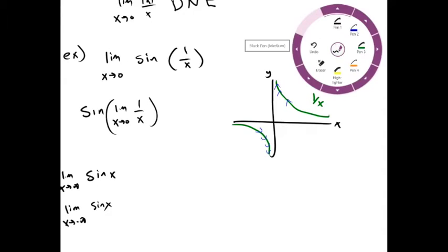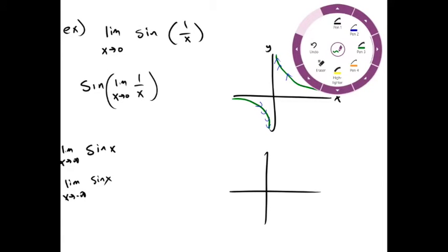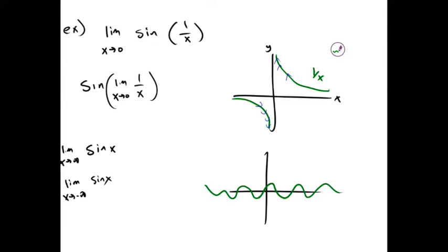If we take a look at the graph for sine, we see that we just have an oscillation. We go between 1 and negative 1 forever, and we never settle on a definite value.